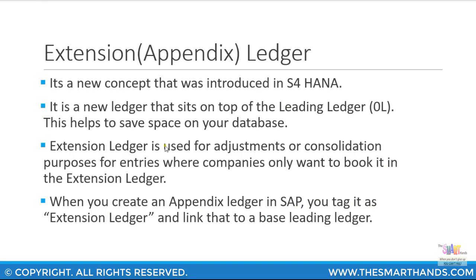Another new functionality with SAP S/4HANA is the introduction of the extension ledger — you can also call it an appendix ledger — mainly because it just sits on top of another ledger. This is a new concept introduced in S/4HANA which did not exist in SAP ERP. This extension ledger is used for adjustments or consolidation purposes by companies where they only want to book entries on the extension ledger, rather than creating a separate ledger and copying over all the general ledger entries from the leading ledger 0L.